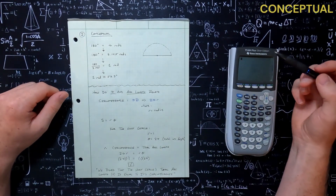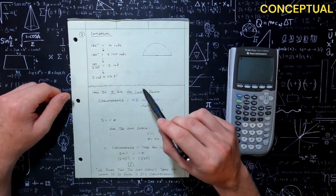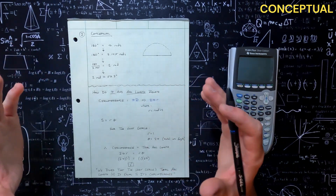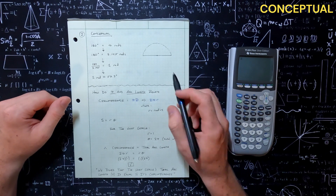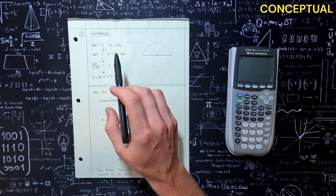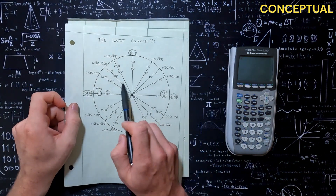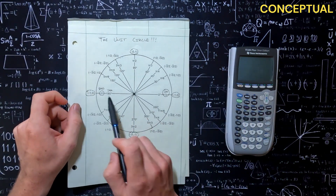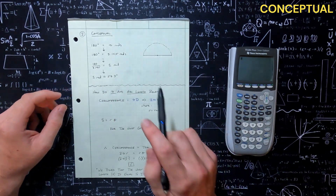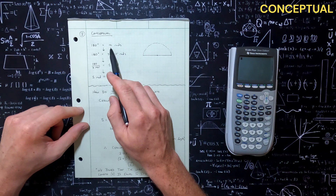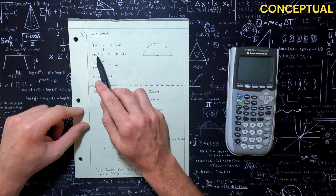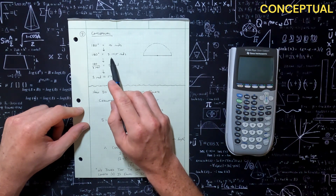Moving on to the conceptual aspect — knowing the relationship between radians and degrees. Earlier we had this unit circle, and we said that 180 degrees equals pi. So 180 degrees equals pi radians. Well, we can rewrite that because we know the value of pi: 180 degrees equals approximately 3.1415 radians.